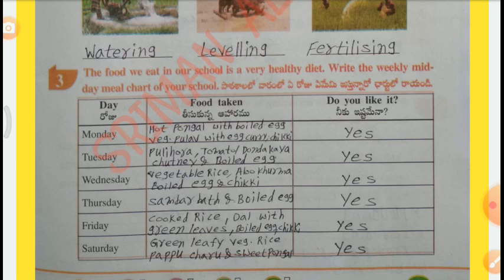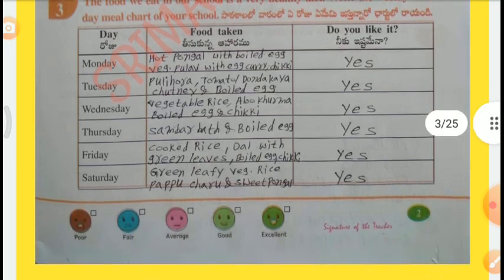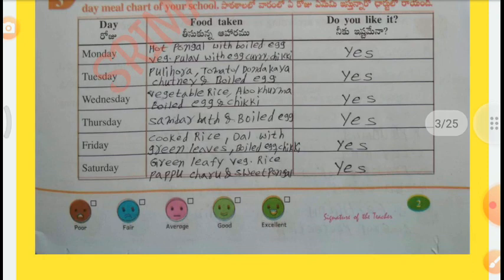Wednesday: Vegetable rice, Alu kurma, boiled egg and chicken. Do you like it? Yes. Thursday: Sambar rice and boiled egg. Do you like it? Yes. Friday: Cooked rice, dal with green leaves, boiled egg, Chikki. Do you like it? Yes. Saturday: Green leaf vegetables rice, Pappu Charu and sweet Pongal. Do you like it? Yes.